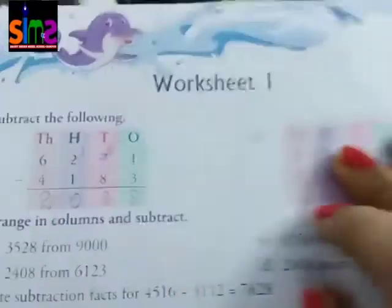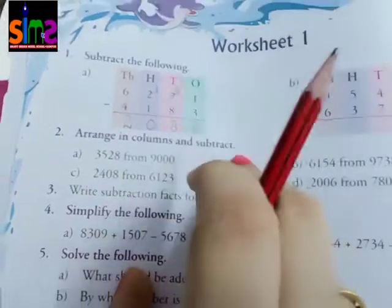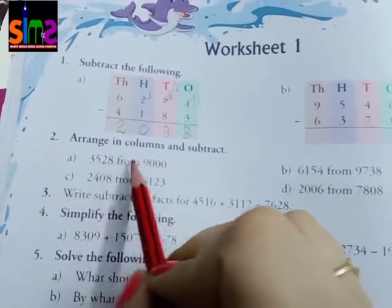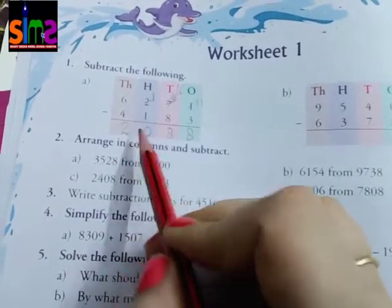Question number 2 is arrange in columns and subtract. They have told you to write these two numbers in columns, so you have to write like this.